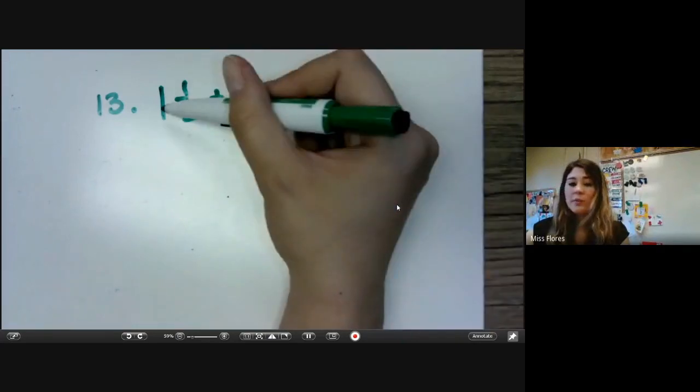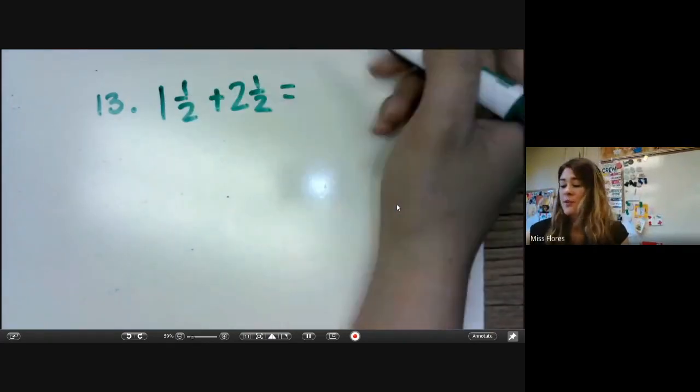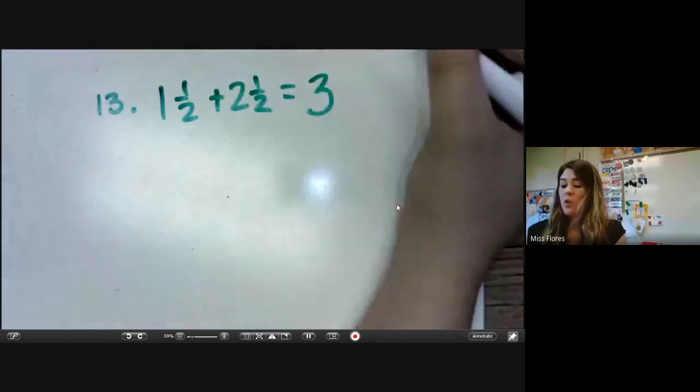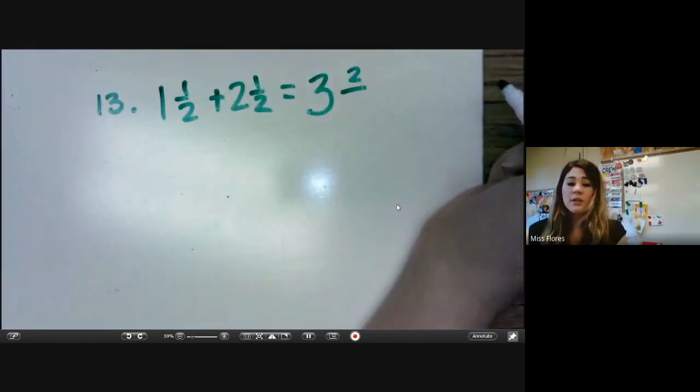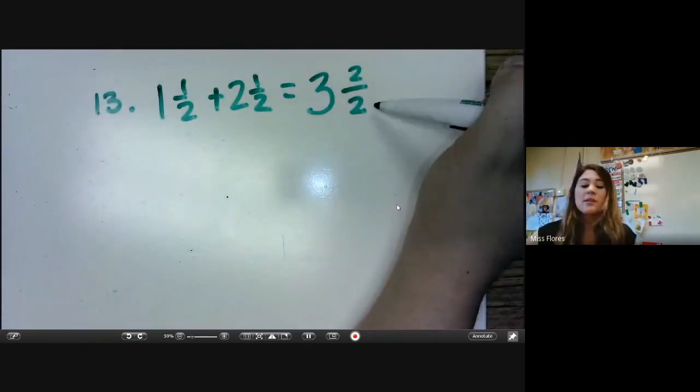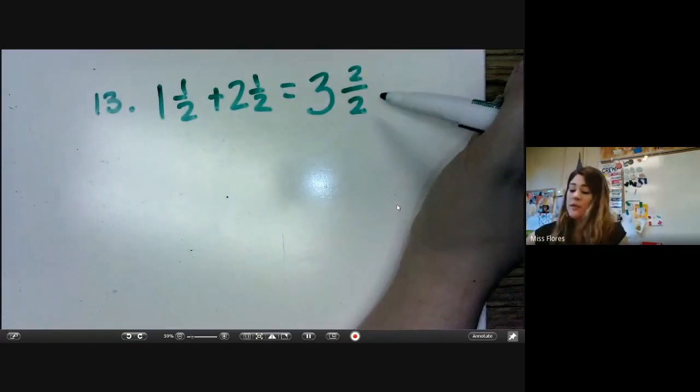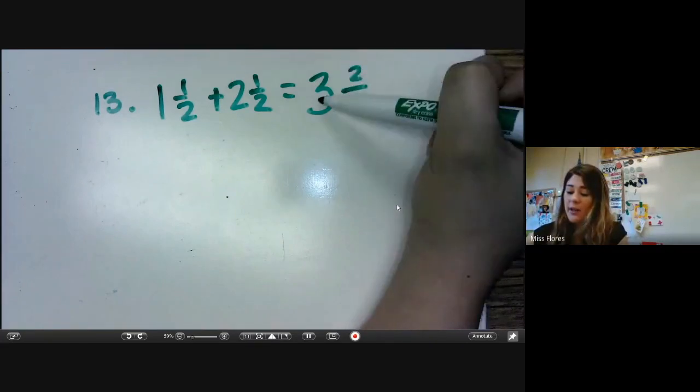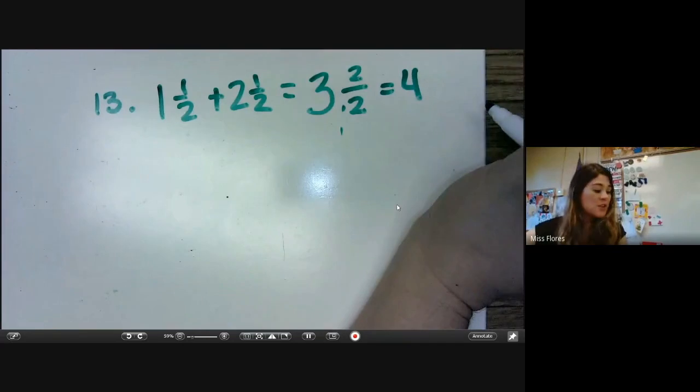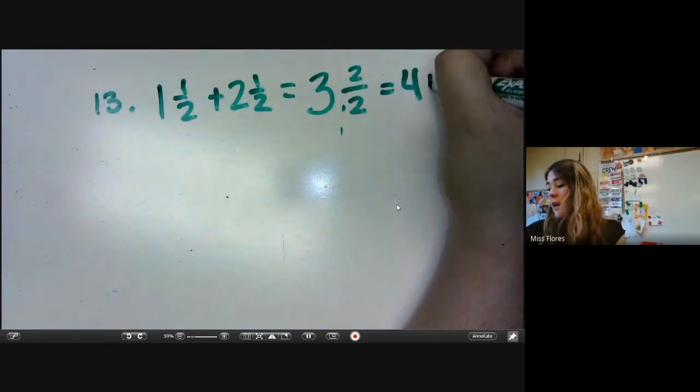Remember, we add our whole numbers, one and two, which gives us three. Then we add our numerators, one and one, which gives us two. And our denominator is two. So we know that when the numerator is the same as the denominator, it equals one. So now we have to add three plus one equals four. So she spent four hours.